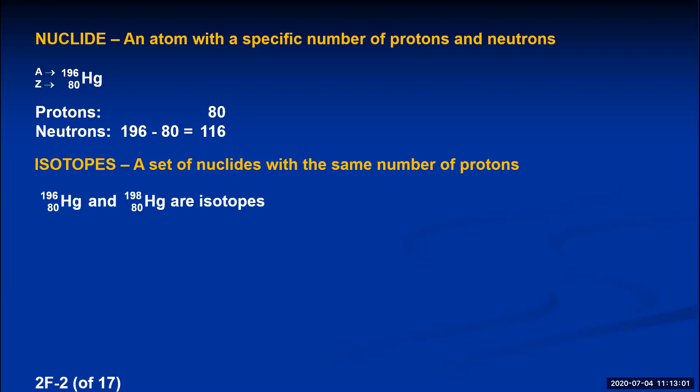To name isotopes, you state the element name followed by the mass number. So the first isotope here is called mercury-196 and can be abbreviated Hg-196. The second isotope is called mercury-198, written as Hg-198.